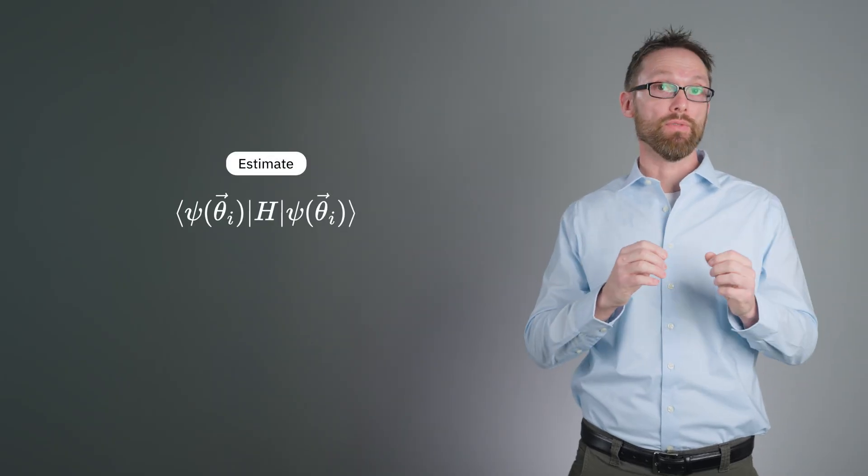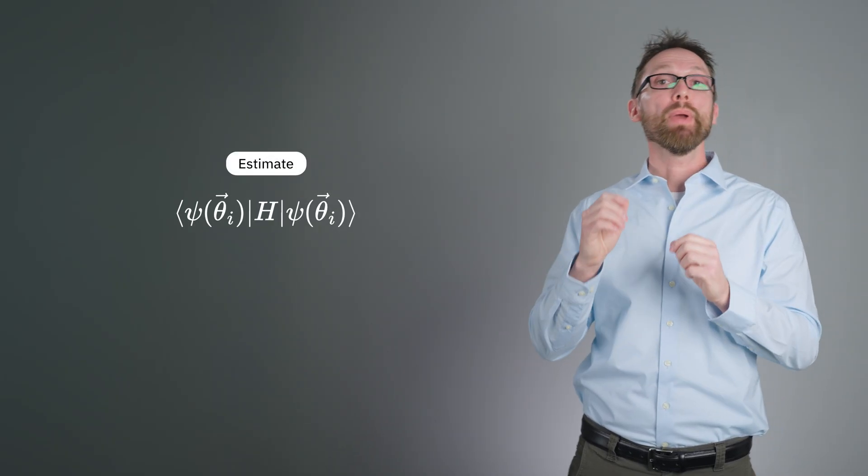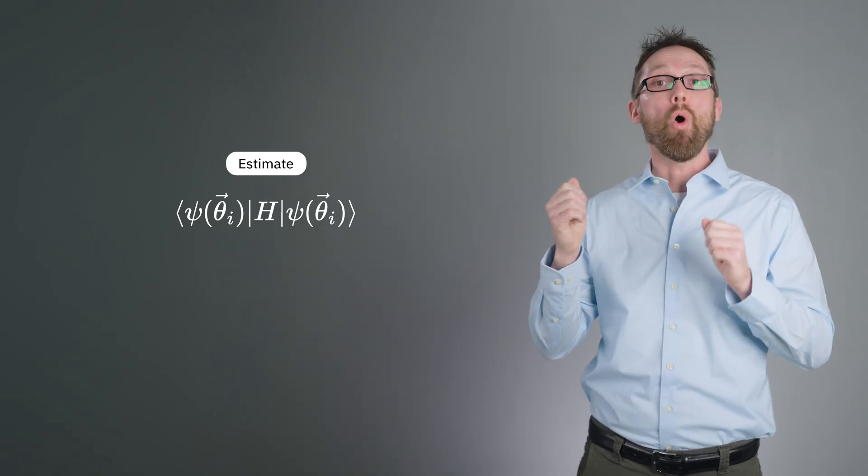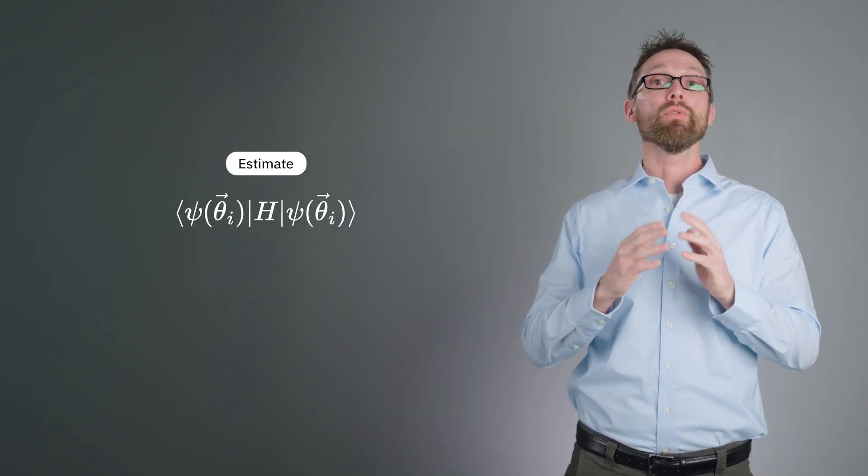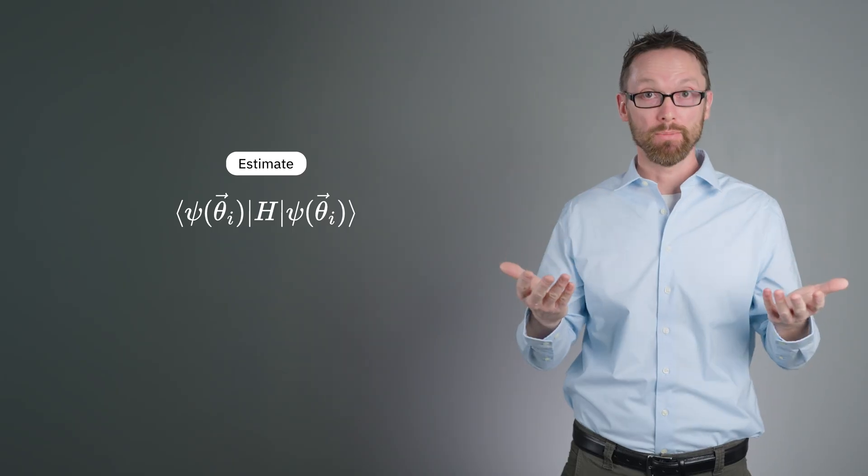Instead of calculating this expectation value, you estimate it by preparing the state, ψ(θ), on the quantum computer using your variational ansatz and then making measurements. Let's pick that apart a bit.